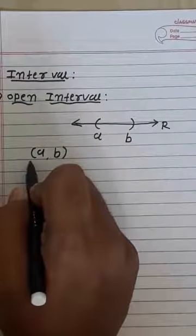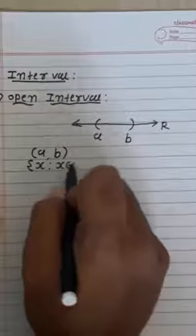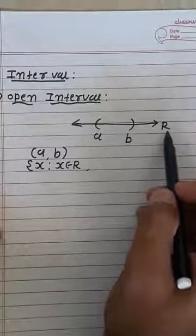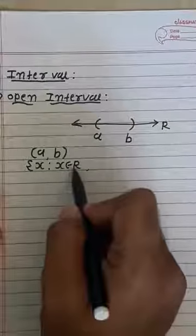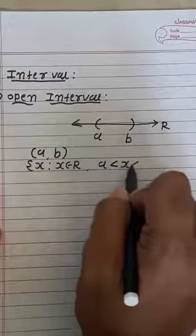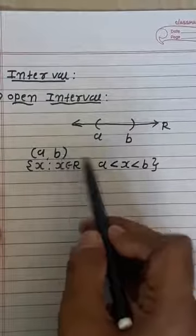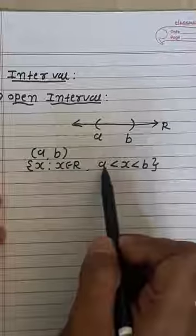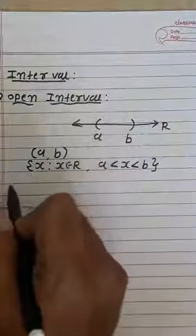In set builder form, we represent it as: {X | X belongs to R, A < X < B}. Here we discuss on the real number line R, so we consider element X belongs to R, denoted by A strictly less than X strictly less than B.